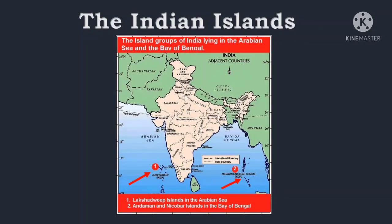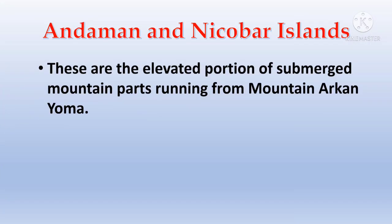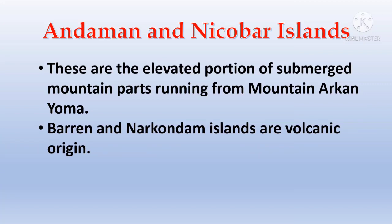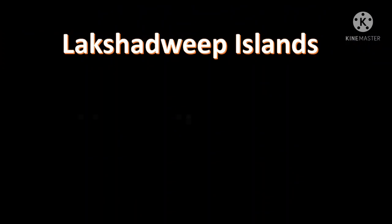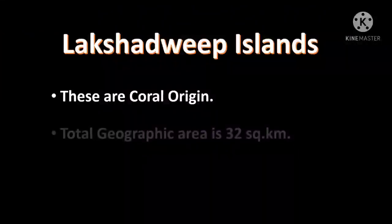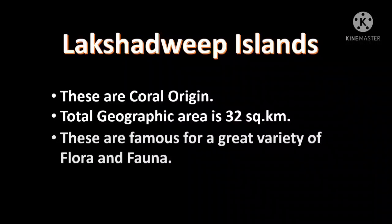India has two groups of islands. The first is the Andaman and Nicobar Islands, located in the Bay of Bengal on the east side. These are the elevated portions of submerged mountain paths running from the Arakan Yoma mountains. Barren and Narcondam islands are of volcanic origin. The Indira Point is the southernmost point of India. The Lakshadweep Islands are located on the west side in the Arabian Sea and are of coral origin. The total geographic area of these islands is 32 square kilometers. They are famous for a great variety of flora and fauna.